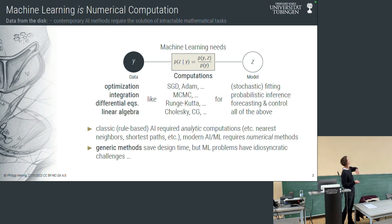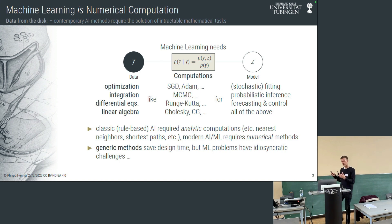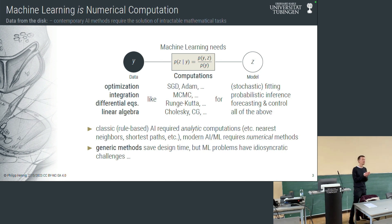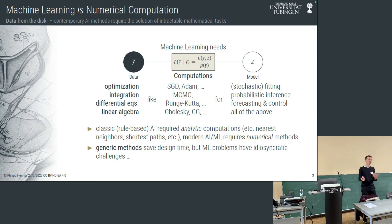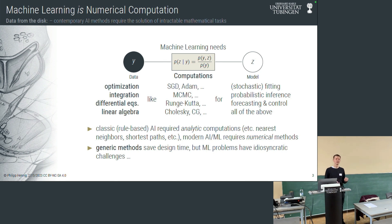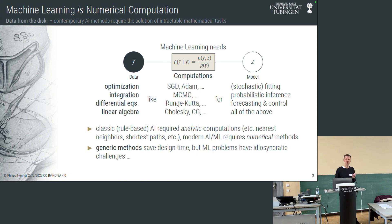These problems were invented by operations research people and economists for optimization, by physicists during the Manhattan Project for Markov Chain Monte Carlo integration, by applied mathematicians over a hundred years ago for differential equations — Runge and Kutta, 1905 and before. So whenever the new field of AI and machine learning encountered these numerical problems, they discovered that there were already algorithms out there. That was good because it meant this field could move fast by using libraries — Python libraries, or previously MATLAB toolboxes. But it's also a problem because machine learning and AI pose specific challenges that these classic methods are absolutely not designed to address well.